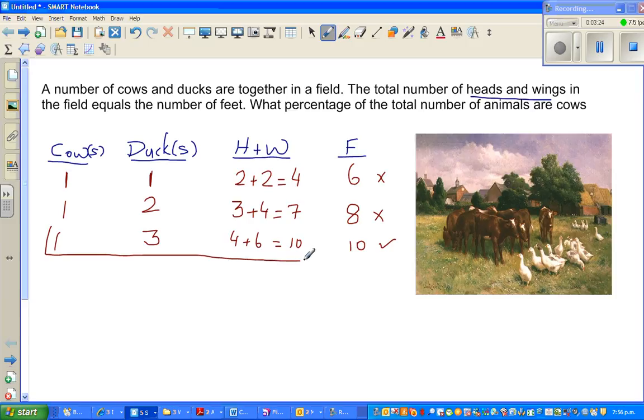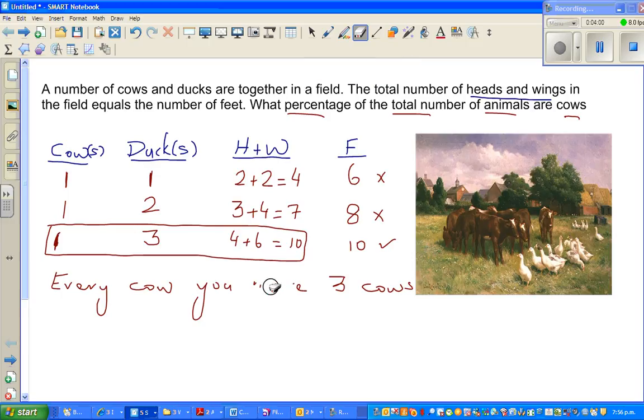Now here you should not misunderstand this answer. The question is not how many cows and how many ducks are there. The question is what percent of the total number of animals are cows? So this is an example of a ratio. So what does this one and three means? For every cow, you have three ducks. This does not mean that the field has one cow and three ducks. It may be possible, but you can't say.